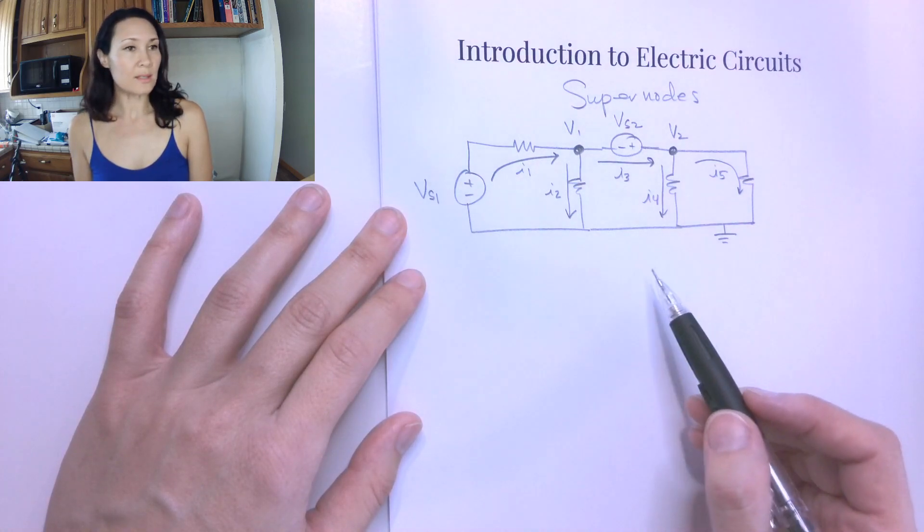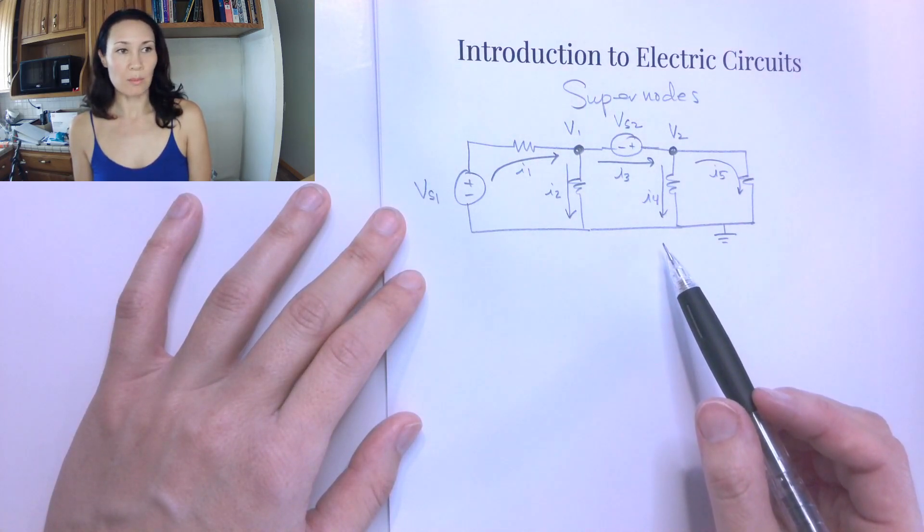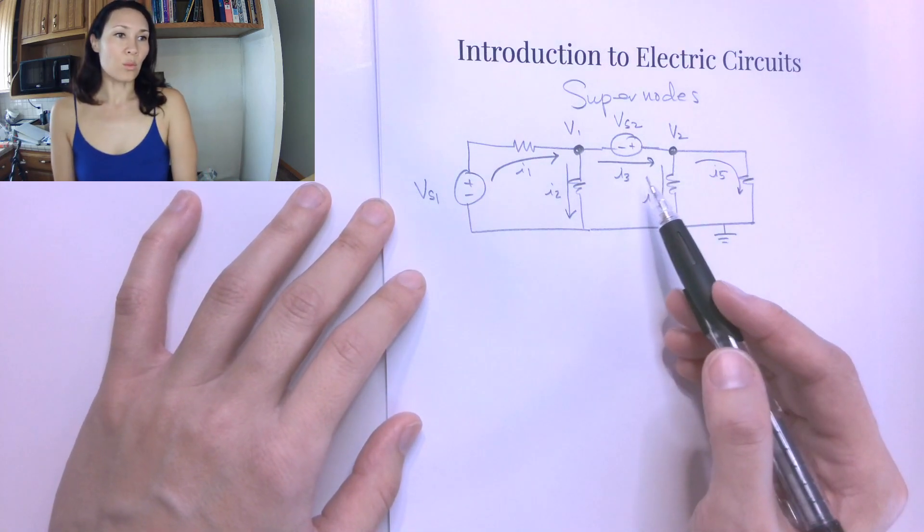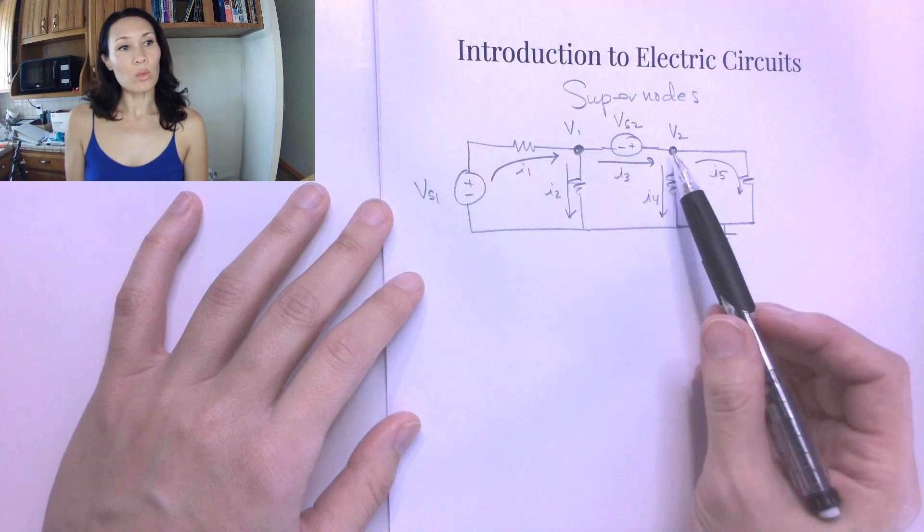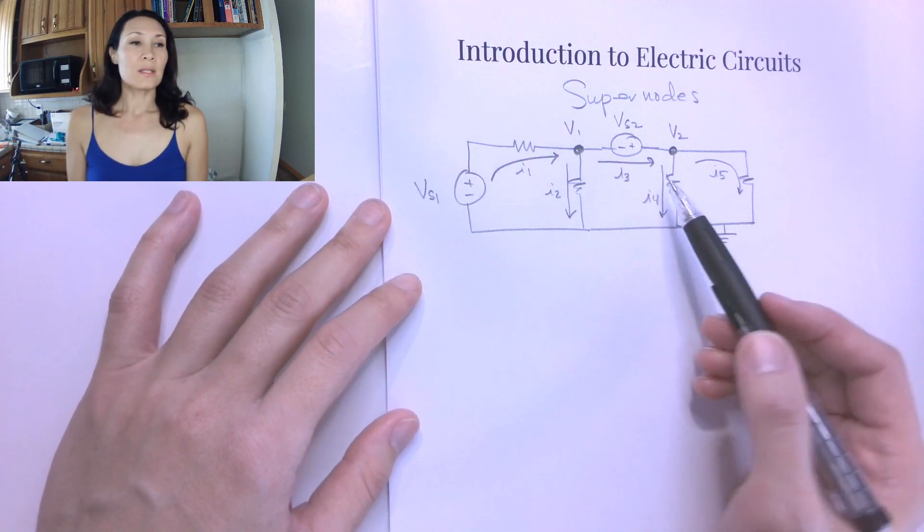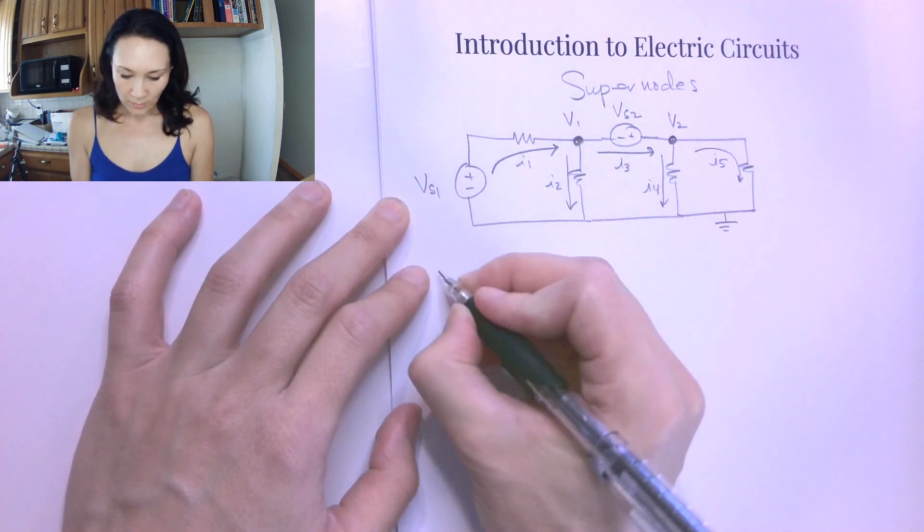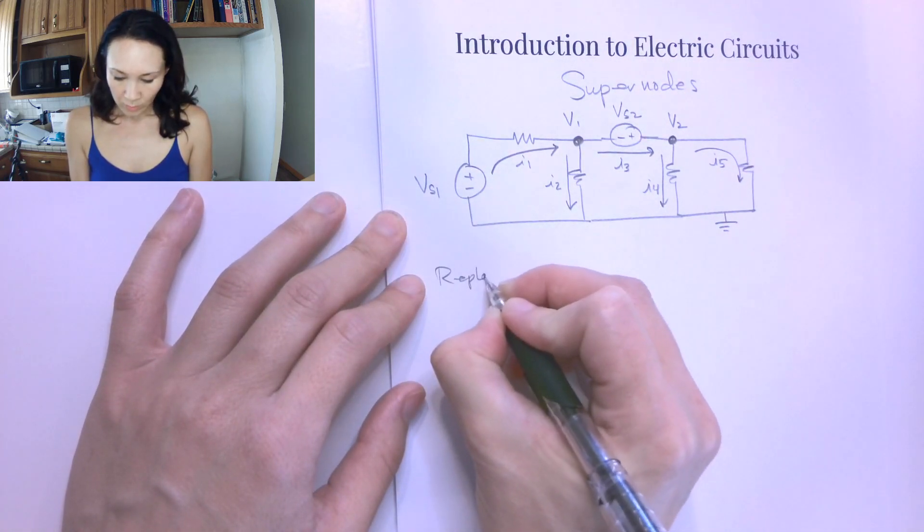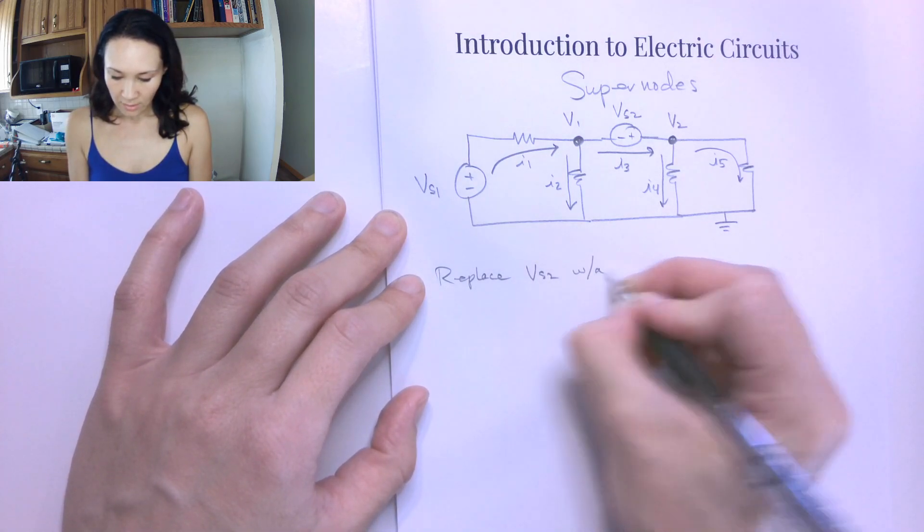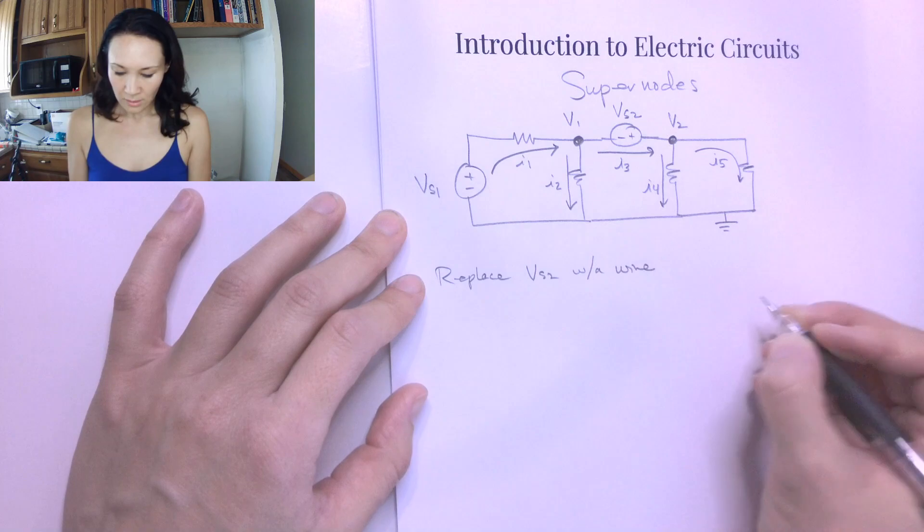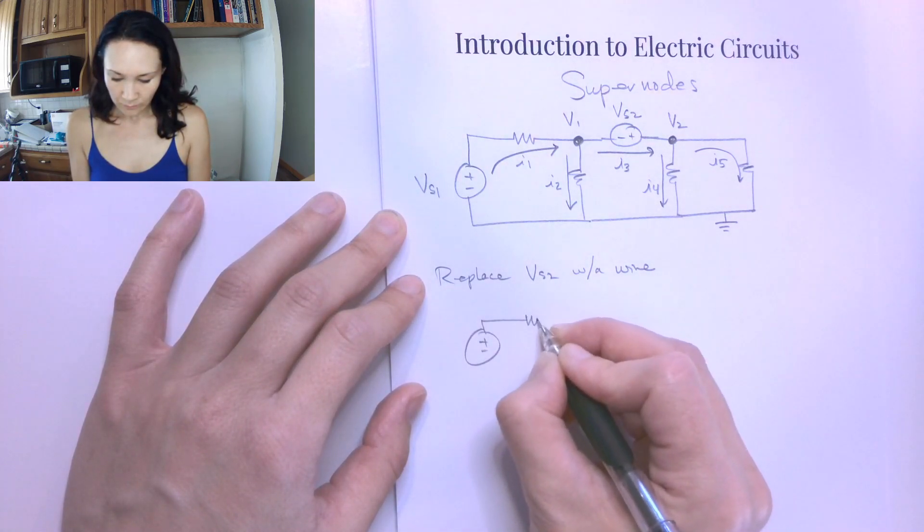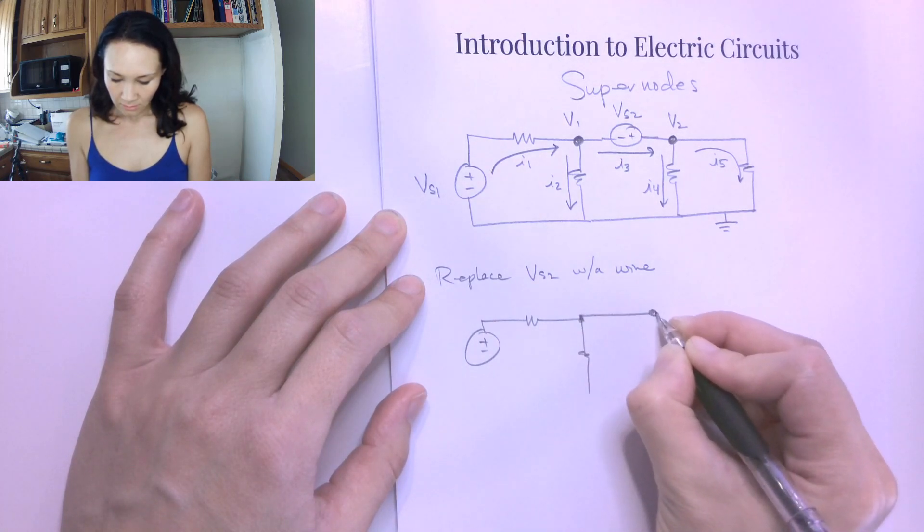So the way we do this is just like when we were doing superposition, we're going to kind of turn off this source for a little while. And when we did superposition, when we removed a voltage source, we replaced it with just a wire. So that's what we're going to do, is we're going to, just for a moment, replace VS2 with a wire. And so our circuit becomes this.